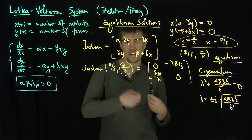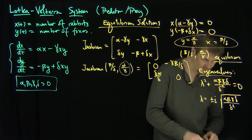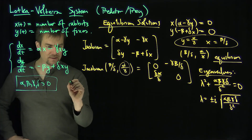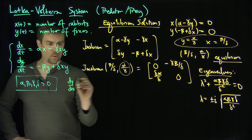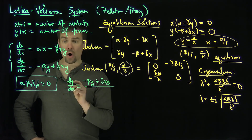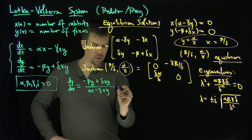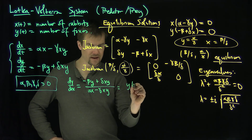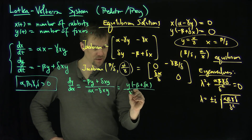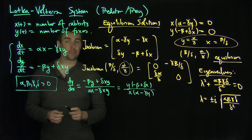Thankfully, we can look at dy/dx to see what happens for this system. The question is: how do the solution curves behave around that equilibrium point? We note that dy/dx equals y times (negative beta plus delta x) divided by x times (alpha minus gamma y). This is a separable differential equation.